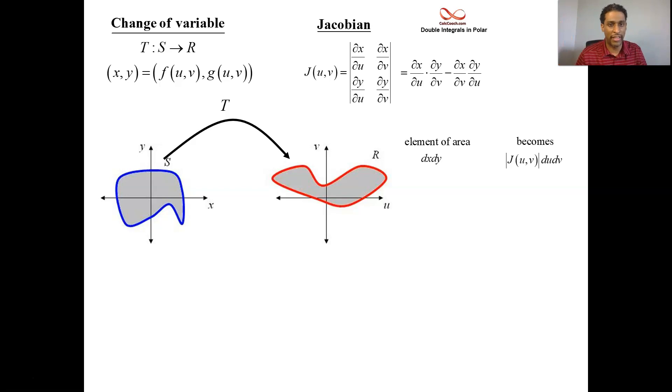Say the Jacobian is 7. So then the area in XY's Cartesian world gets mapped to a new area that's 7 times as magnified by a factor of 7. Or the other way around, it could be 1 over 4. Then it could be condensed by a factor of 4. It could be that the Jacobian is actually a function of U and V. So it could be multiplied by that function.